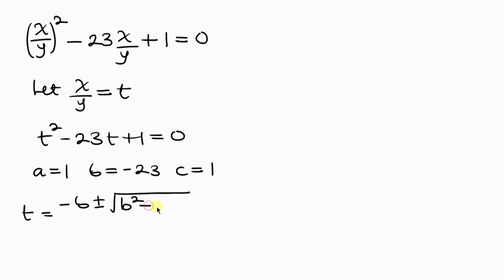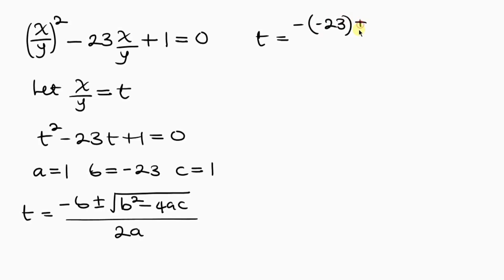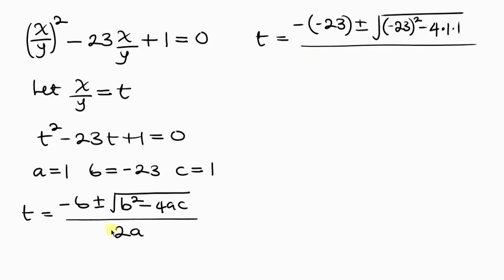We're looking for t, so t equals negative b plus or minus the square root of b squared minus 4ac, all over 2a. Substituting: negative b — since b is negative 23, this gives positive 23 — plus or minus the square root of negative 23 squared minus 4 times 1 times 1, all over 2 times 1, which is 2.